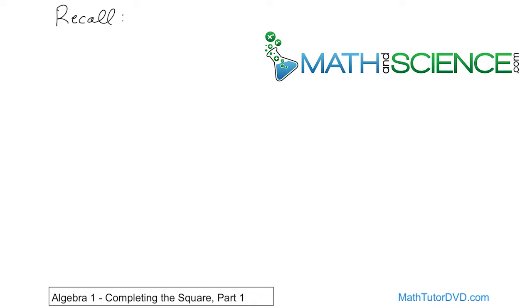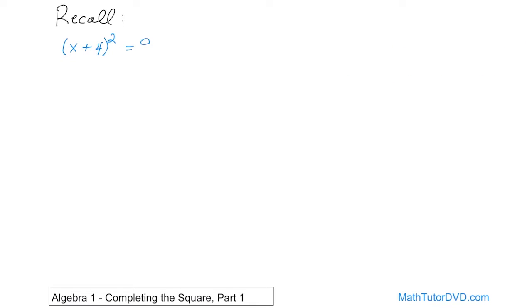We've been solving some of these quadratic equations in the last three sections, so make sure that you've watched those last three sections and you understand. One of the types of equations we've done has been something like x plus 4 quantity squared equals 9. If you've watched those last sections and worked those problems with me, you should know that this is easily solvable — we have a perfect square on the left and a number on the right. Let's go through it again just in case you're a little rusty.